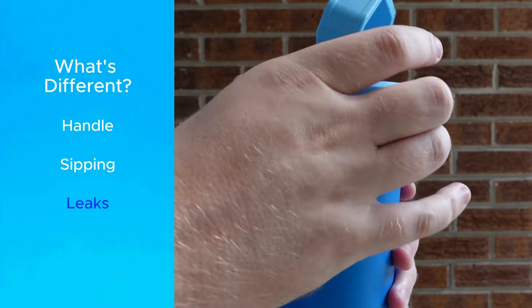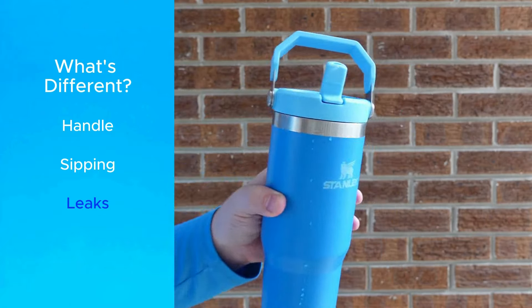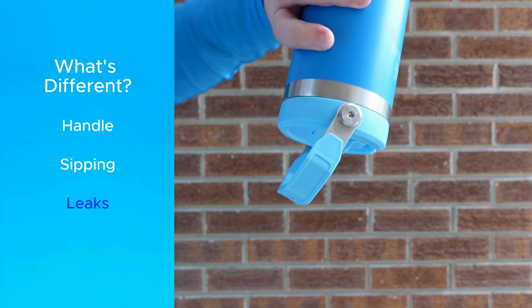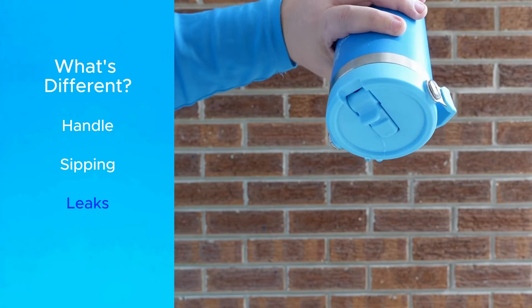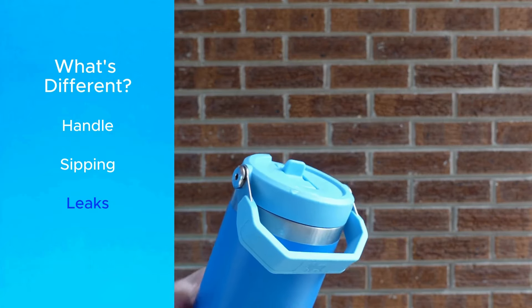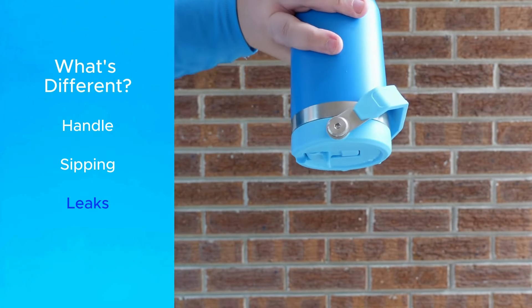The Iceflow, on the other hand, has a traditional pivot-style spout that can be closed so it won't leak. Though, be sure to check it before you put it in a bag because the spout, being even a little bit open, can let water through. It's clear that this was done to answer the criticism over the Quencher's leaky design.